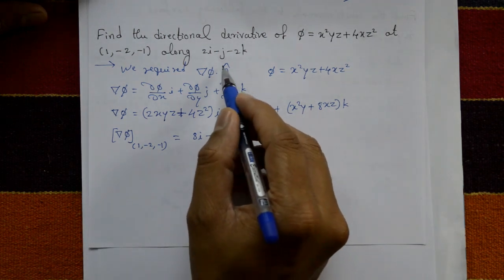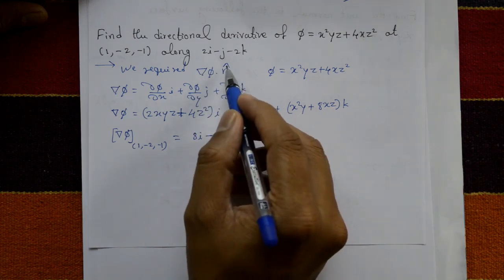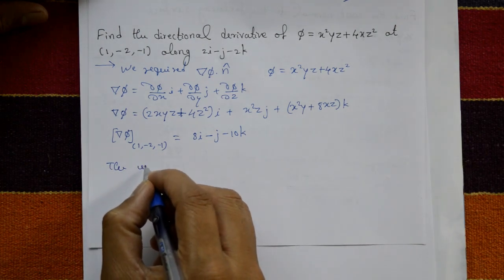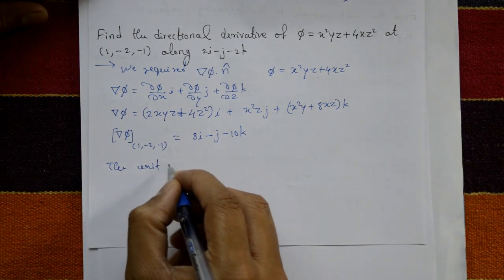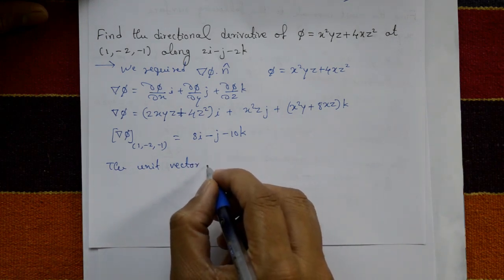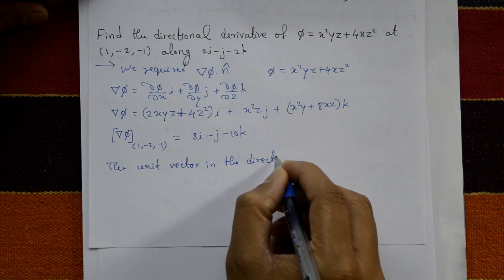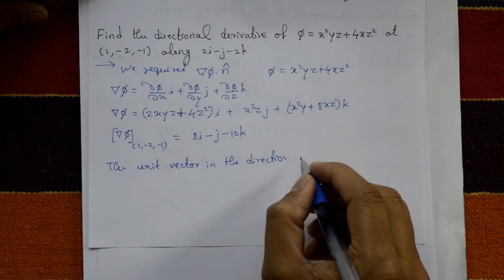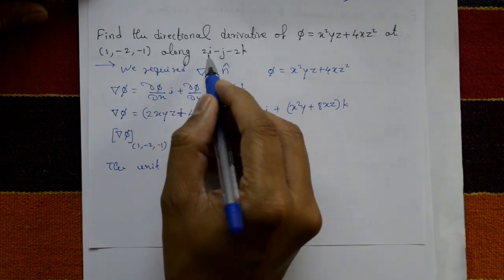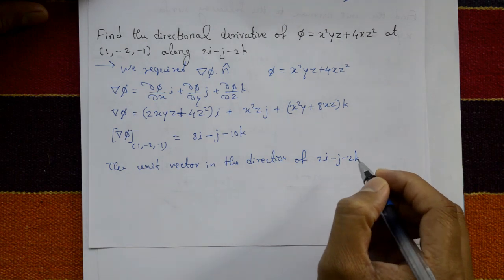Next we need the required unit vector. Del phi is our gradient of phi. The unit vector is in the direction of the given vector, which is 2i minus j minus 2k.